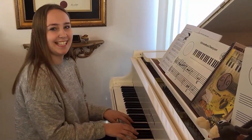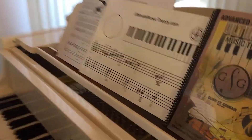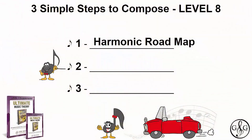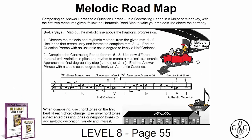I did some wrong cadence. But good for you for experimenting! You did great. Now let's take a look at the melodic roadmap. The second step to composing in level eight is the melodic roadmap — composing an answer phrase to a question phrase in a contrasting period in a major or minor key, with the first two measures given, following the harmonic roadmap to write your melodic line.